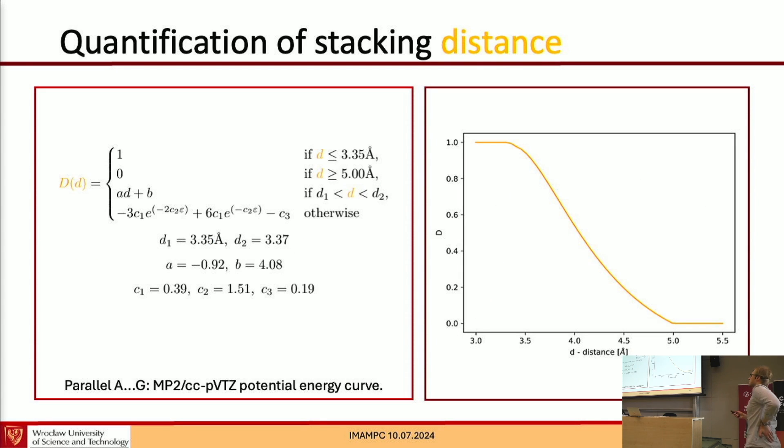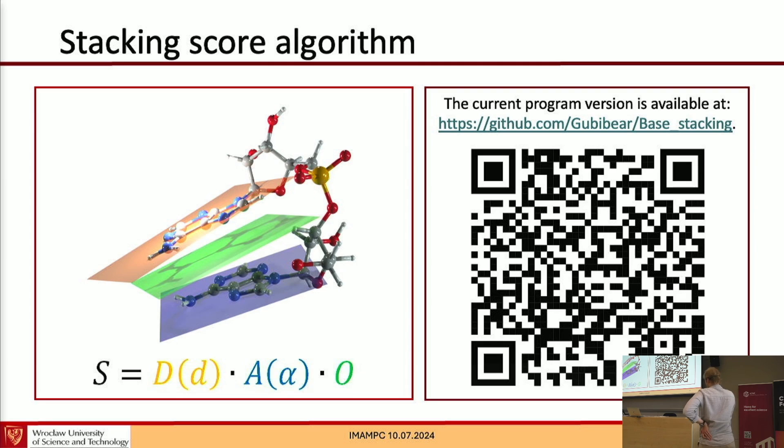Next, I also use the distance between the bases calculated as a sum of distance between this middle plane and center of each of the nucleobases. And this function for the distance is presented here. This part is an anharmonic function obtained by fitting to the potential energy scan done for an adenine-guanine system. And then when I have these three parameters, I define the stacking score as a product of these three parameters because each of those parameters goes from zero to one, the stacking score also goes from zero to one, and the one is the system in which the bases are parallel to each other and exactly overlap each other, while zero is completely unstacked system.